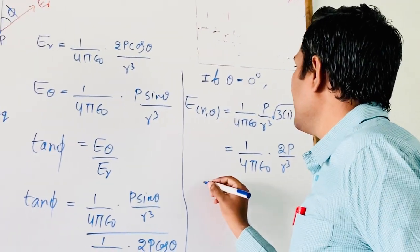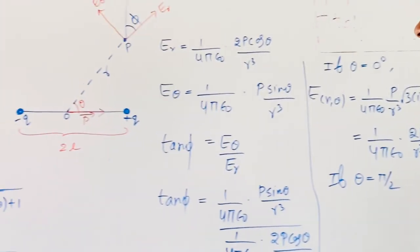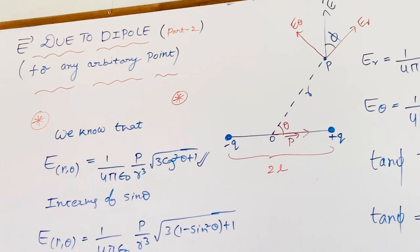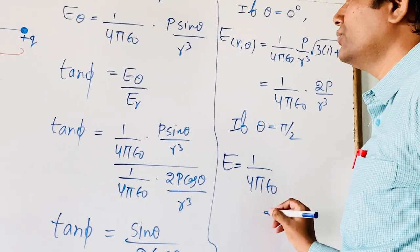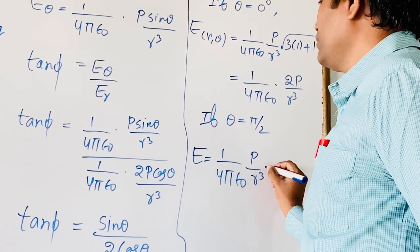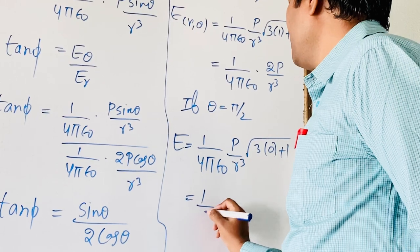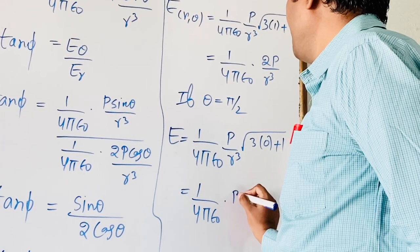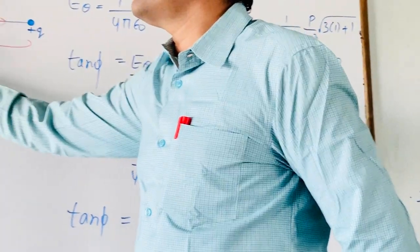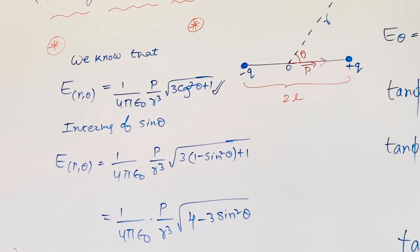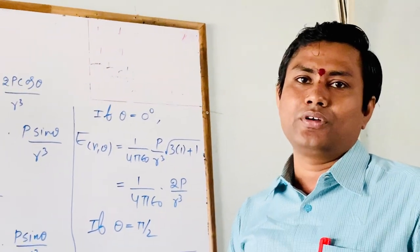Suppose I am taking theta is equal to pi by 2. Replacing theta with pi by 2 in the expression, what we will get is E equal to 1 by 4 pi epsilon naught into P by R cube, multiplied by the square root of cos squared 90, which gives simply 1 by 4 pi epsilon naught into P by R cube. These two formulas are special cases of the main formula. This is today's lecture. I hope you understood it well. In the next session, we will meet with one more new concept. Thank you for watching.